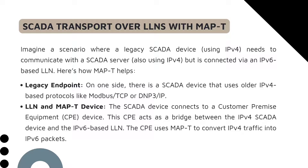Now we will consider this scenario: we will use a legacy SCADA device. A legacy device operates on IPv4, and it needs to communicate with the SCADA server. The SCADA server also uses IPv4. However, we can use an IPv6-based LLN. So we use MAP-T. We have a legacy endpoint on one side — that is our SCADA device — which uses IPv4-based protocols like Modbus, TCP, DNP over IP. This SCADA device is used as customer premises equipment (CPE).